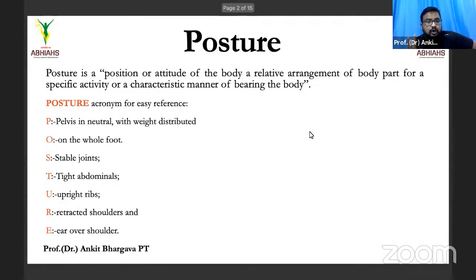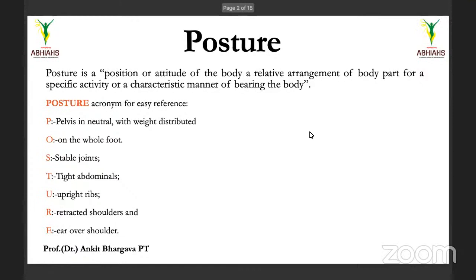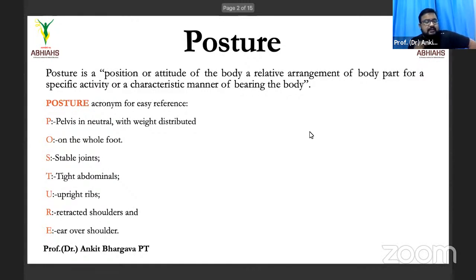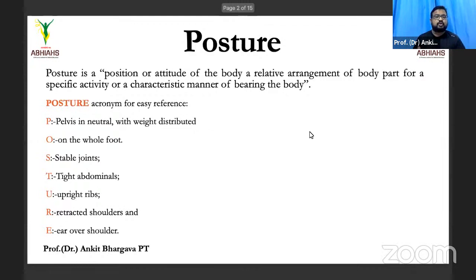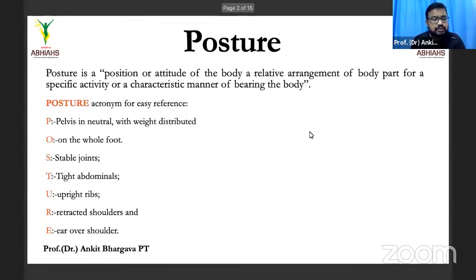Good posture includes stable joints — particularly the pelvis, where the ASIS should be stable and aligned — tight abdominals, ribs in an upright position, retracted shoulders, and the head over the ears. You can also correlate this with the anatomical position as a correct posture reference.